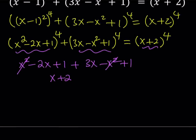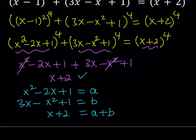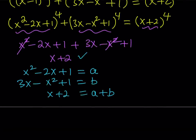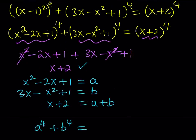This calls for substitution. Let a = x²-2x+1 and b = 3x - x²+1. When we add them, we get a+b = x+2. So the equation becomes a⁴ + b⁴ = (a+b)⁴.